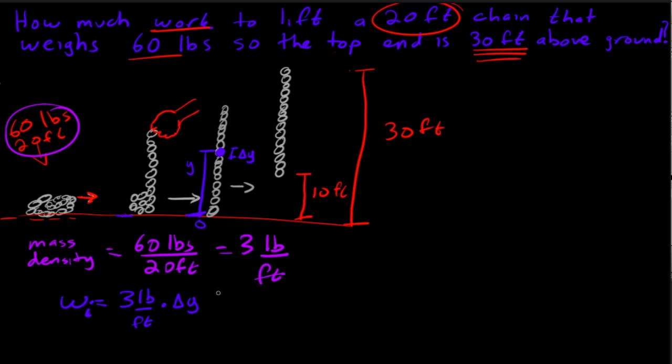is going to be three pounds per foot times the thickness of that slab, delta y, which of course is going to go to zero feet, and then times the distance that it needs to go. Okay, so that distance is going to be y feet. Okay, and so then here we have, we have that the work to take this slab from here to here is going to be three y foot pounds.